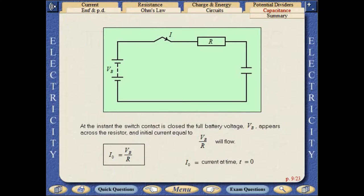At the instant the switch contact is closed, the full battery voltage VB appears across the resistor and initial current equal to VB over R will flow.